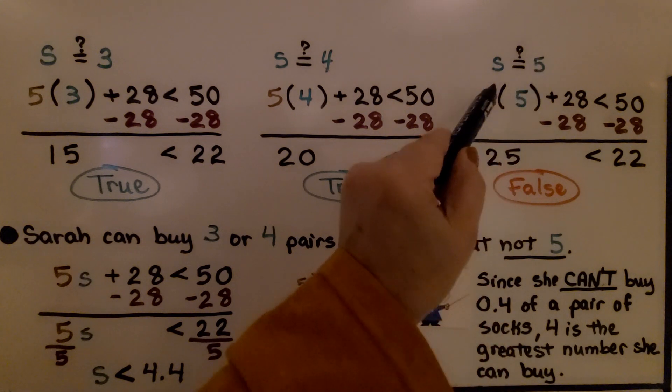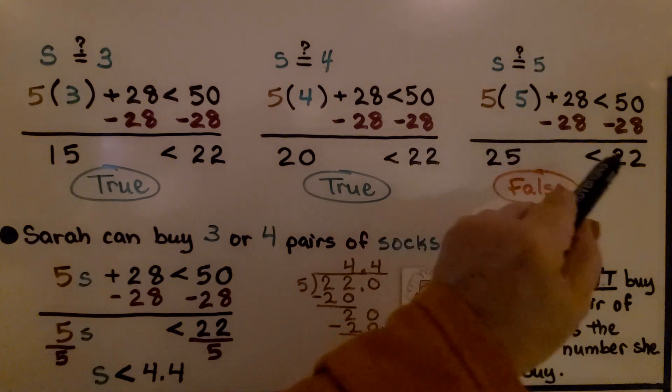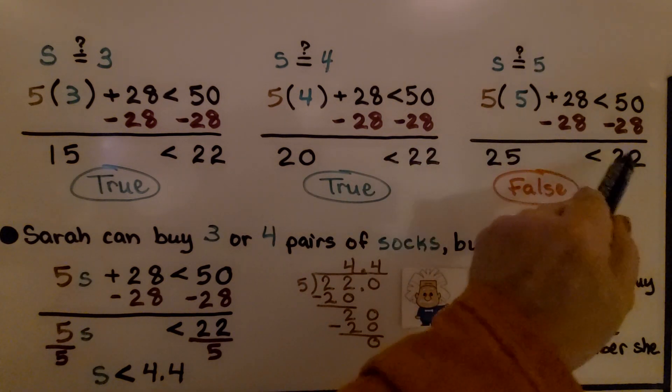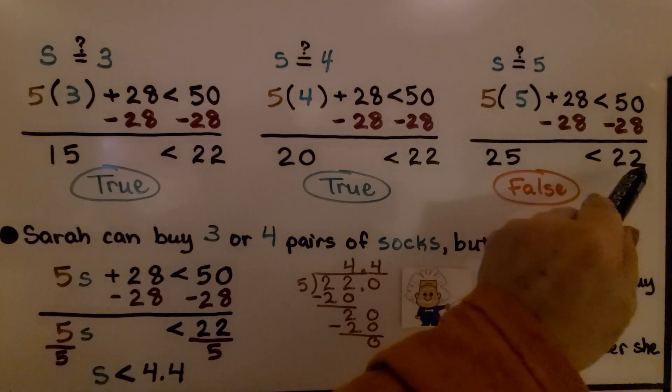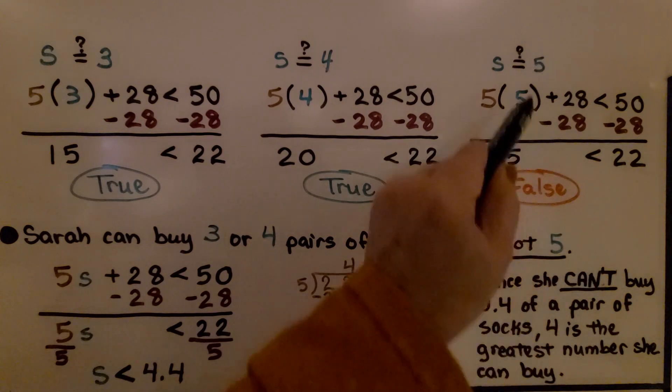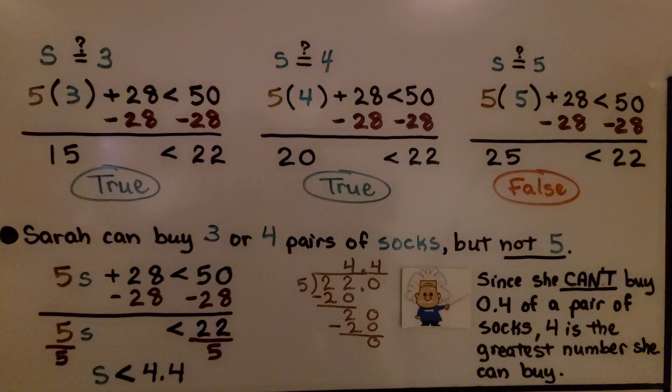When we try 5, 5 times 5 is 25, and on this side we have 22. 25 is not less than 22. That's false. 5 is not a solution. Sarah can buy 3 or 4 pairs of socks, but not 5.